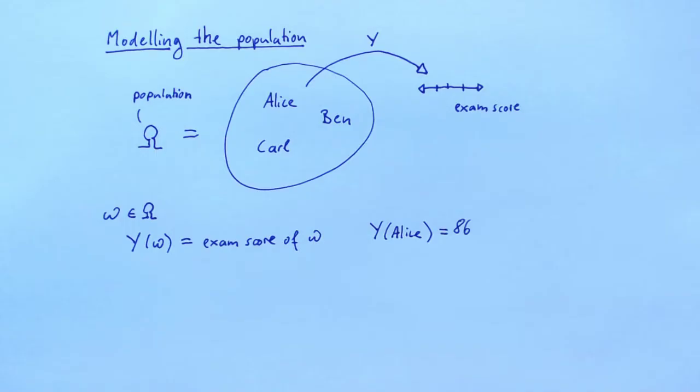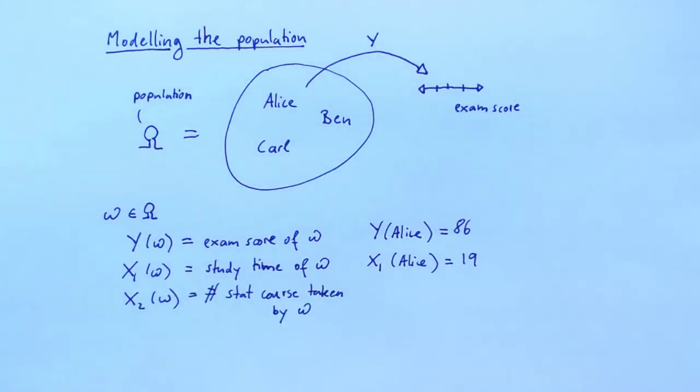Let's define more functions that describe the population. X1 tells us how many hours a person has studied. For example, if omega is Alice and if Alice has studied 19 hours, then X1 of Alice is 19. X2 tells us how many statistics courses someone has taken before they enrolled in the econometrics course. Since econometrics builds on concepts from statistics, someone who already knows a lot of statistics will have a leg up and won't have to study as much to get a good grade. If Alice has already taken two statistics courses, then X2 of Alice will be 2.